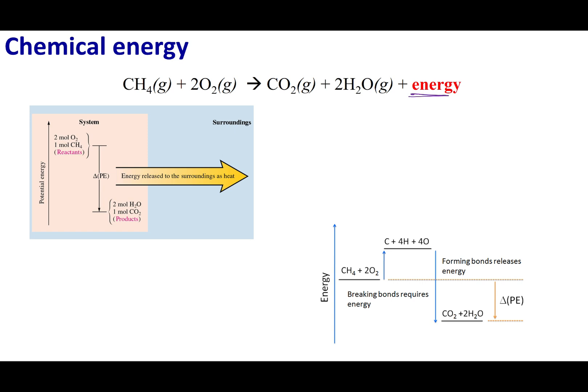But more importantly, we had energy as a product. So I want you to recall back what happened in Chem 1A. We talked about bond breaking and bond forming. If I start out with my reactants of methane and oxygen, one way I can get to my products is I can break every single bond. Bond breaking costs me energy — in other words, I have to put energy into the system.